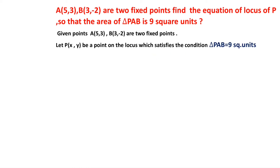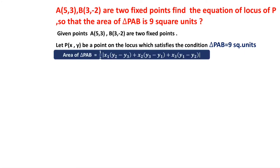The formula for area of a triangle is: half times the modulus of x1(y2 - y3) + x2(y3 - y1) + x3(y1 - y2). Using this formula we can find the area of a triangle if three vertices are given. Here the vertices are A(5,3), B(3,-2), and P(x,y), and we substitute to get the area equal to 9 square units.